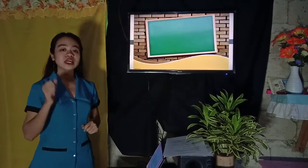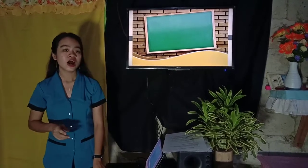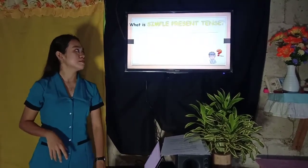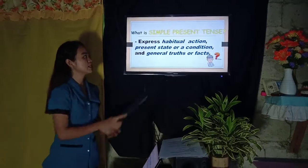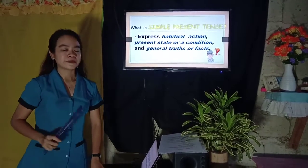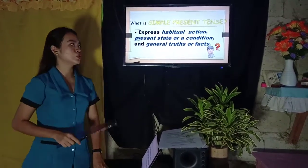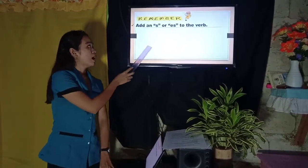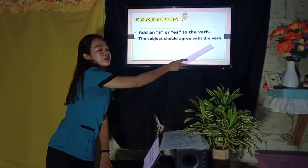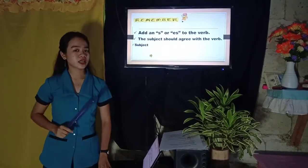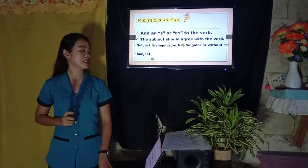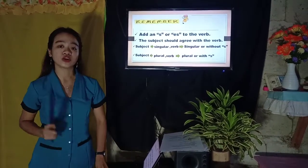Action verb and linking verb can be used in simple present tense. Our lesson for today — we will discuss simple present tense. Simple present tense expresses habitual action, present state or condition, and general truth or facts. In simple present tense, all we have to do is add S or ES to the verb, and make sure the subject agrees with the verb. If the subject is singular, the verb is also singular without S. If the subject is plural, the verb is also plural with S.